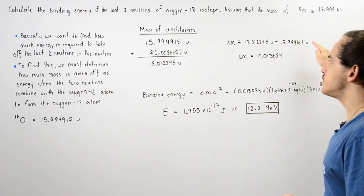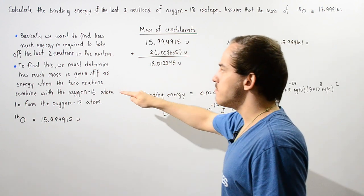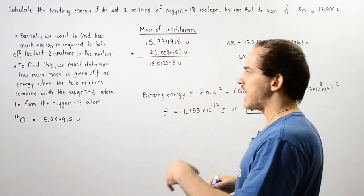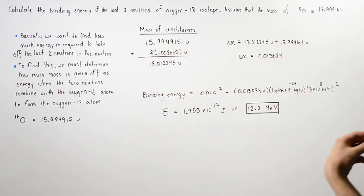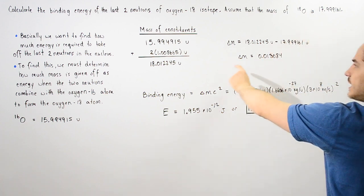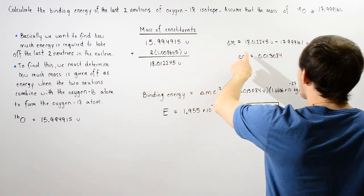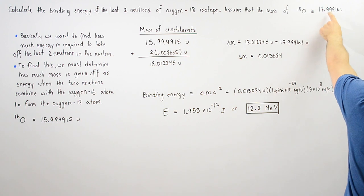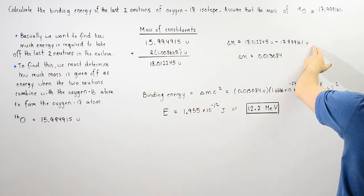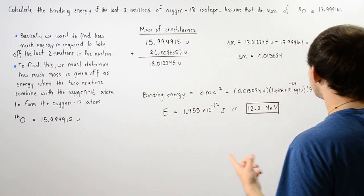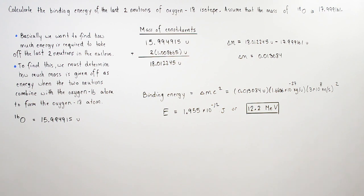This change in mass corresponds to the amount of mass that is given off as energy, and that corresponds to the binding energy of those two neutrons. So 18.012245u minus 17.999191u gives us about 0.013084u.